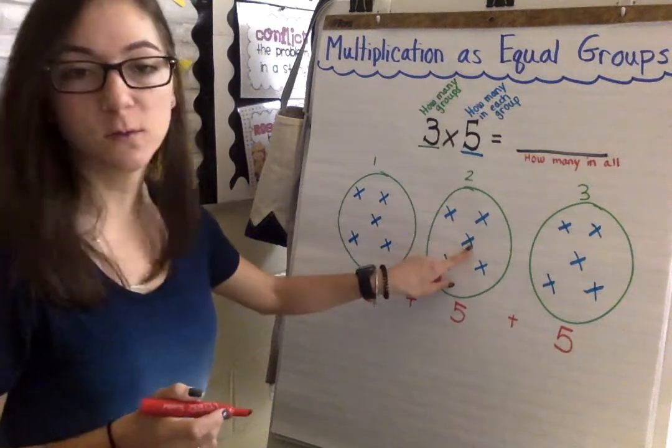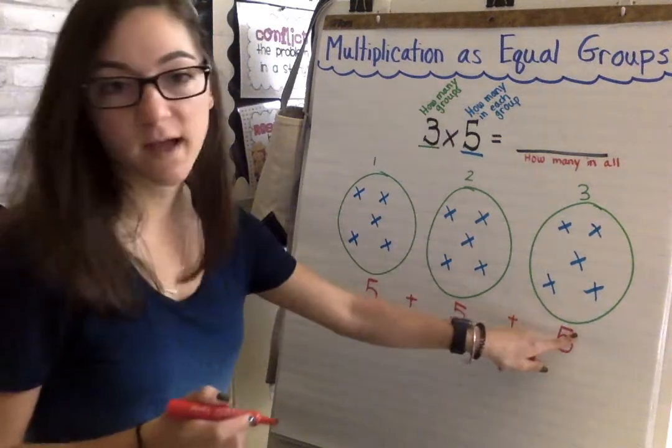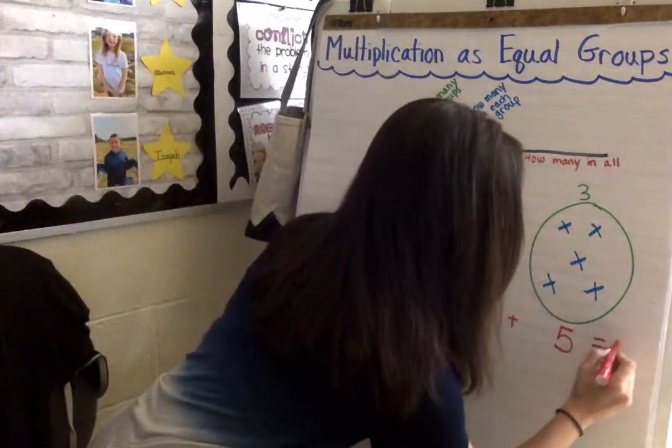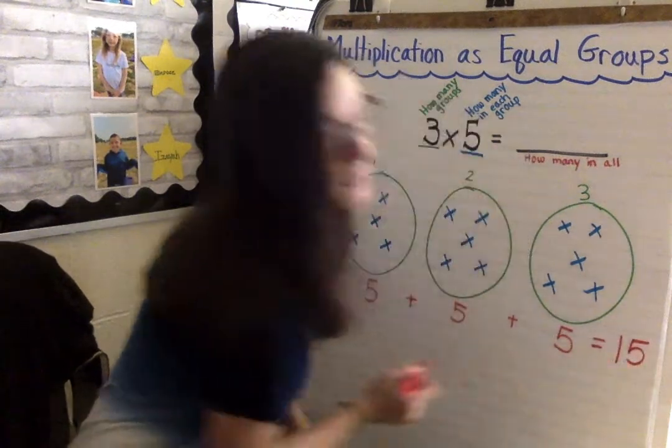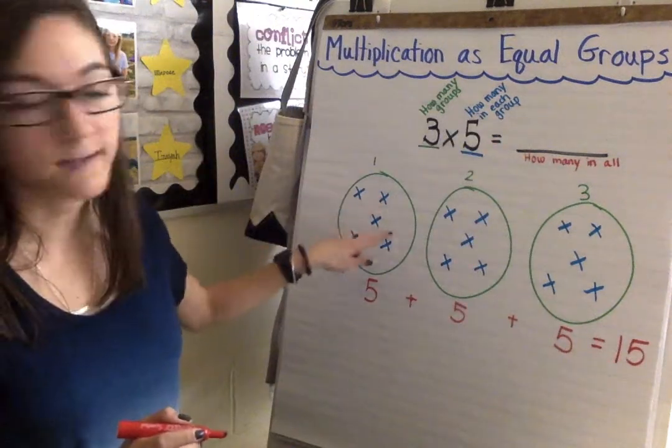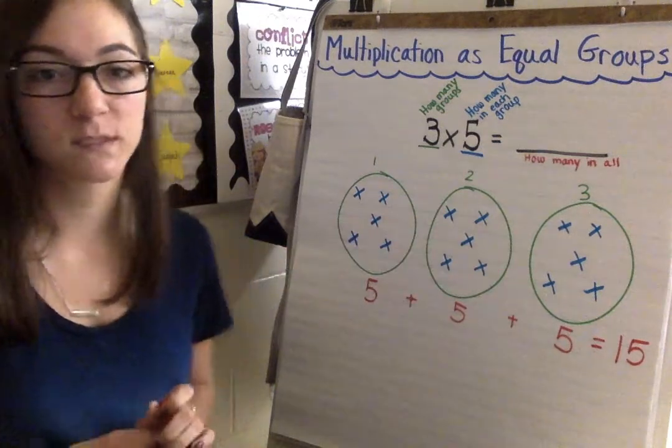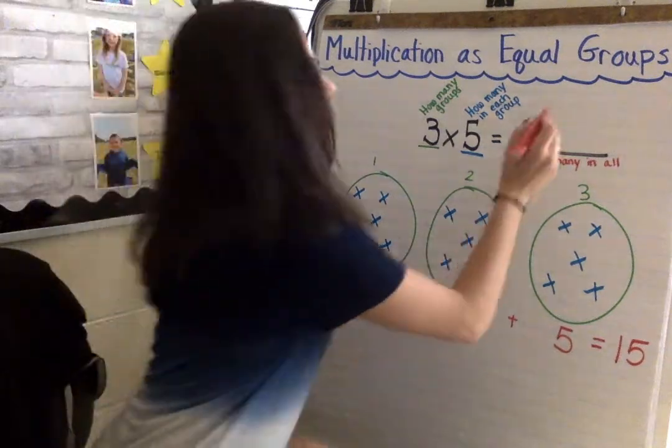So five plus five equals ten. Ten plus five equals fifteen. And if we were to count how many x's we have in all of our groups we would get a product of fifteen.